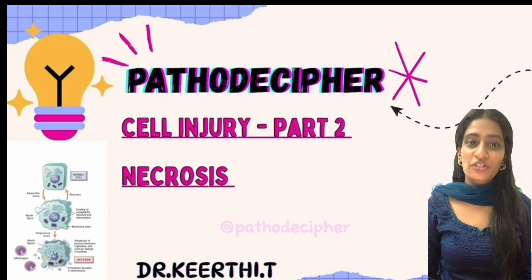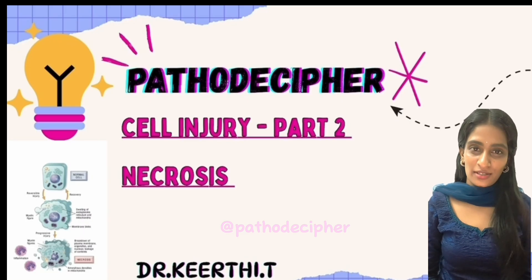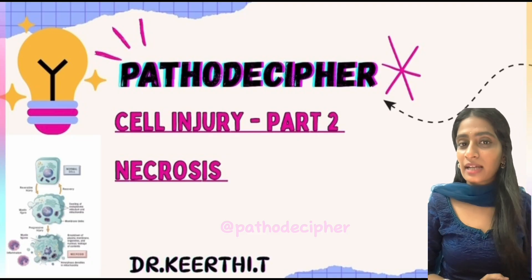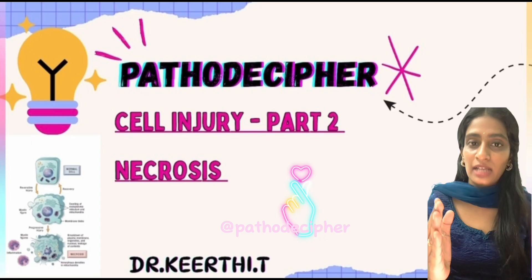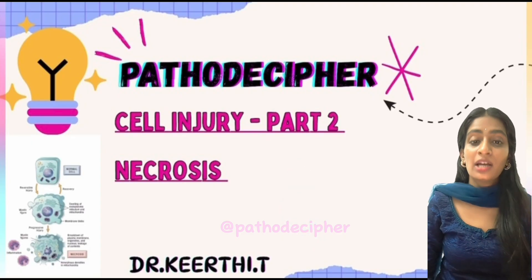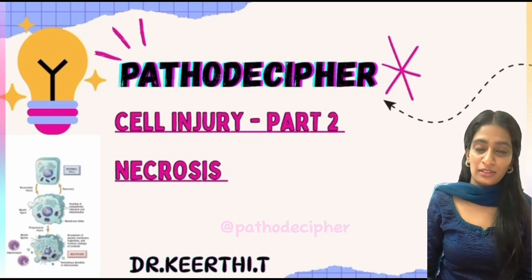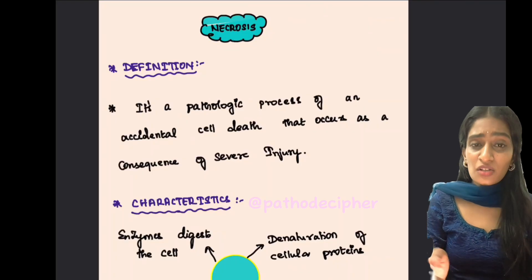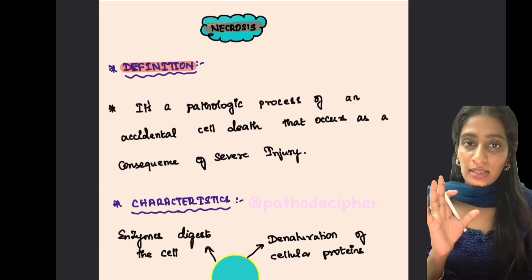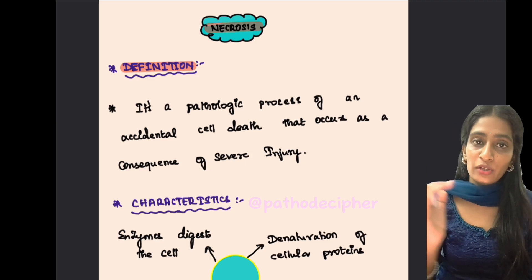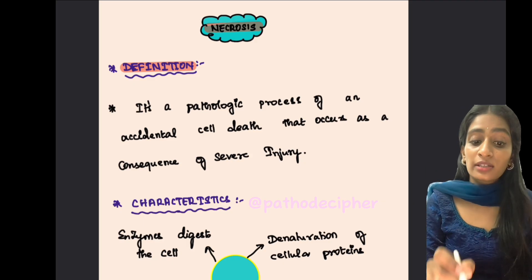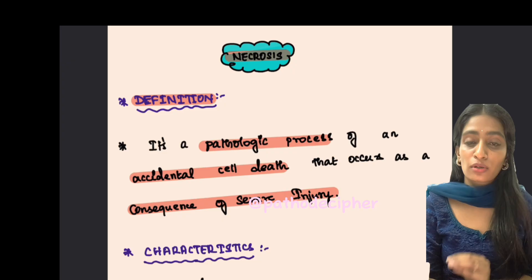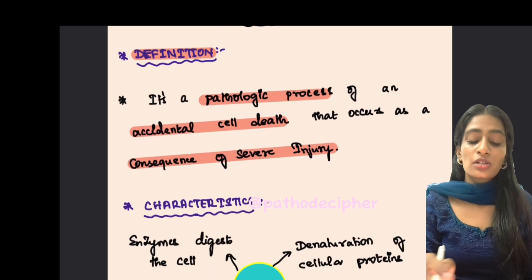Welcome to Patho DC channel. Today we are going to learn about necrosis, which is a very important question for both undergraduate and postgraduate exams. In this class, I will simplify what to write when necrosis is asked in your exam so that you can score higher. Coming to the definition: necrosis is a pathological process of accidental cell death that occurs as a consequence of severe injury.